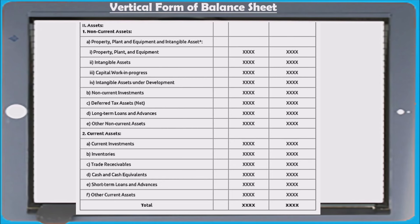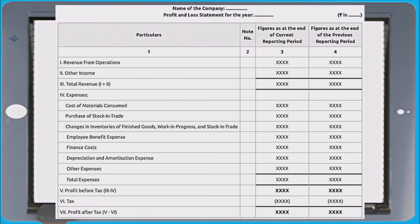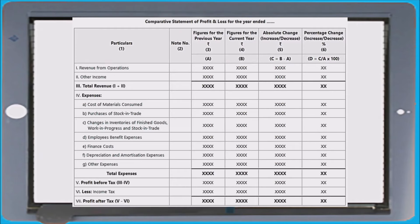Remember the format of the statement of P&L. It starts with revenue from operations, other income is added to get total revenue. Then expenses — cost of materials consumed and all other expenses are added to get total expenses. The difference between total revenue and total expenses gives profit before tax. A percentage or amount of tax is deducted, then we get profit after tax of the firm.